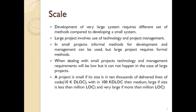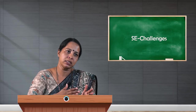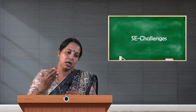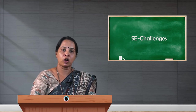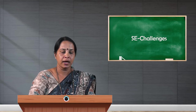A project is considered small if it is within around 10,000 delivered lines of code. If it is between 10,000 to 100,000 lines of code, it is called medium size. If it is less than a million lines of code it is large, and very large if it is more than a million lines of code. So depending on the complexity and size of the project, the appropriate methodology must be adopted.